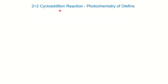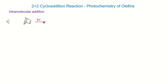First we will see the 2+2 cycloaddition reaction for olefins. We will mostly discuss examples having intramolecular addition reactions. In the first example, you have two non-conjugated double bonds. Under photochemical condition, the molecule will first excite to the singlet state, then after inter-system crossing it will go to the triplet state. From the triplet state the reaction will occur, and under photochemical reaction homolytic cleavage occurs, so all the double bonds will show free radical formation.